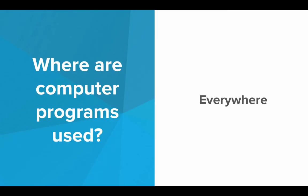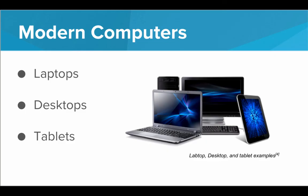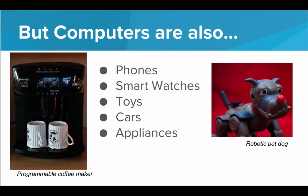So where are programs used? The short answer is everywhere. Of course, programs are used on our computers — laptops, desktops, tablets — and we can write our own programs to run on these machines. But they're also used in our phones, smartwatches, toys, cars, and appliances. Sometimes we're not able to write our own programs on these devices; they come with a prepackaged program that is the only program they can run. A programmable coffee maker, a robotic pet dog that reacts to your touch or to light — these are all running programs so the computer knows what to do.